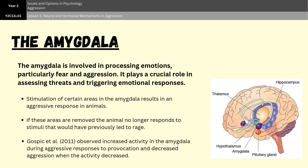If these same areas are surgically removed, however, the animal no longer responds to stimuli that would have previously led to rage. The role of the amygdala in human aggression was investigated by Gospic et al. in 2011, who used fMRI scans to study participants responding to mild provocation. These scans showed increased amygdala activity when participants reacted aggressively. However, when participants were given a benzodiazepine — a drug that calms the nervous system — amygdala activity decreased and aggression levels also dropped, highlighting the role of the amygdala in aggressive behavior in humans.